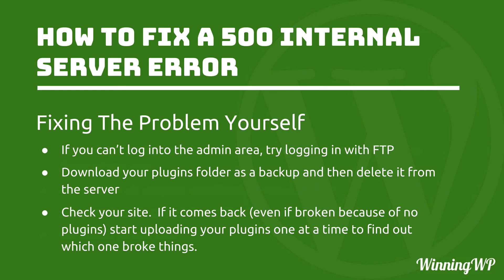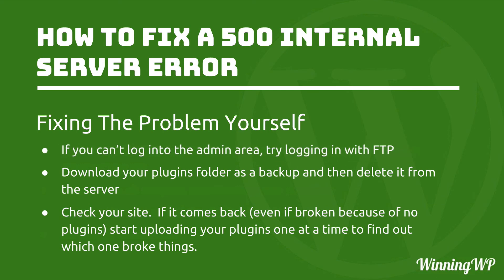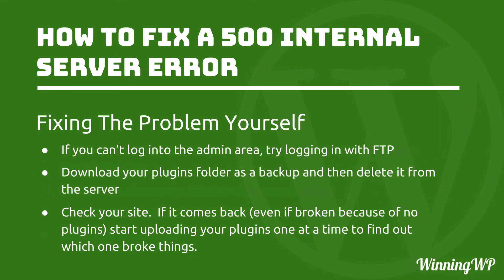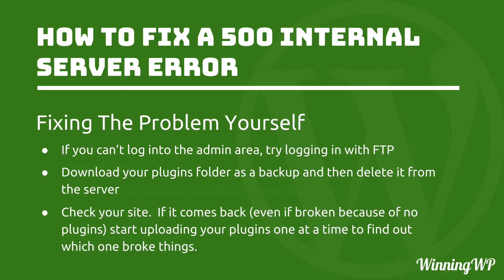But what if you can't log into the admin area? That happens sometimes, where the front and the back are both broken. If you can't log into the admin area, try logging in with FTP. If you're unfamiliar with FTP, check our WinningWP video on how to use it — we'll make a link in the description below. The first thing you'll want to do is download your plugins folder as a backup, and then simply delete it from the server. This has the same effect as deactivating them like we did earlier. Then check your site. If it comes back — even if it looks broken because there are no plugins — start uploading your plugins one at a time to find out which one broke things. Once you know, you can delete just that one and upload all the others, and then deal with the bad plugin accordingly.